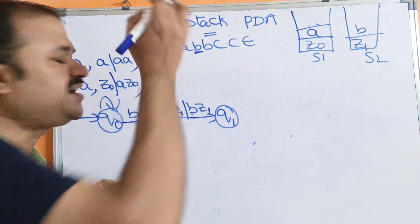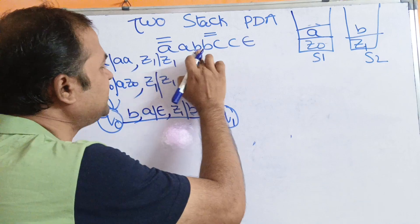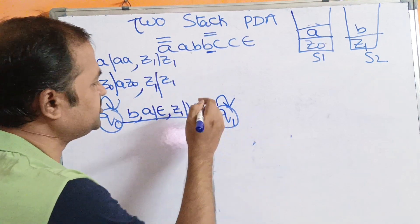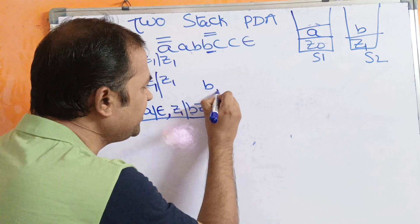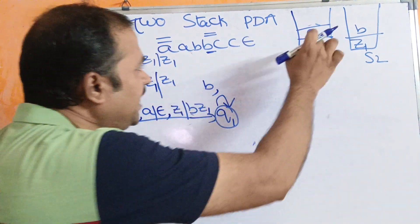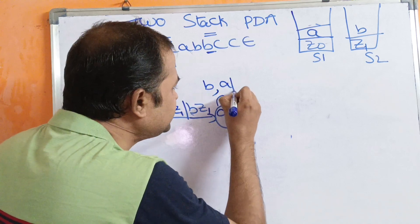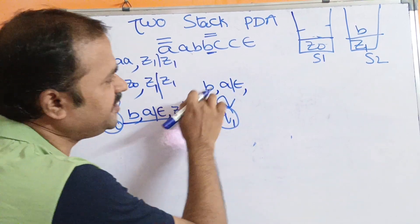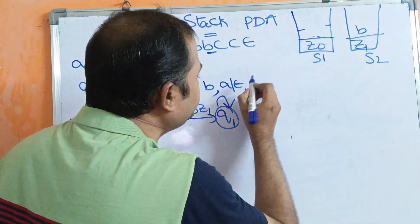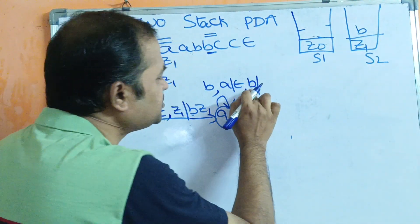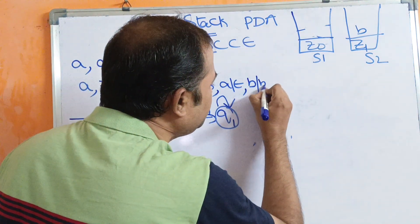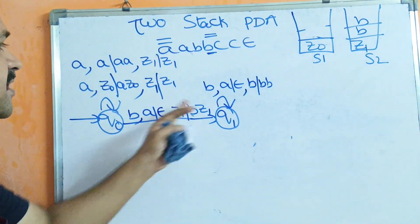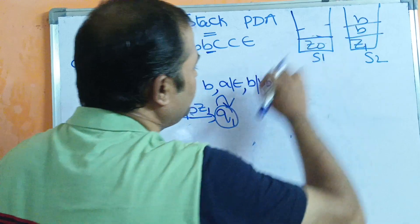We can read any number of B's using a self-loop on Q1. If the input symbol is B and stack 1 topmost symbol is A, pop A from stack 1. If stack 2 topmost symbol is B, push B onto stack 2, so the stack content becomes BB.